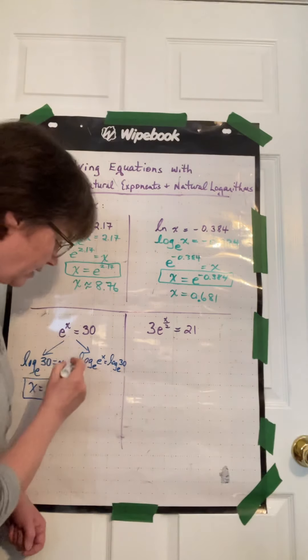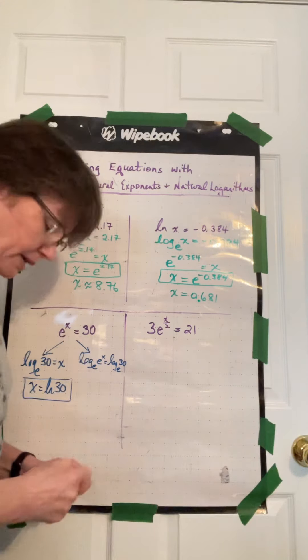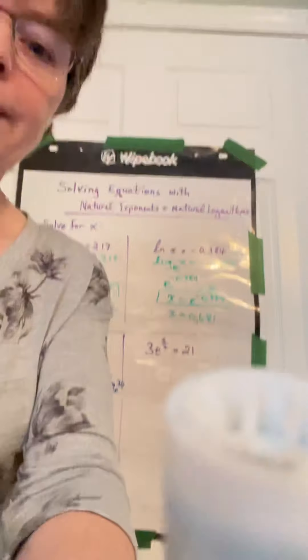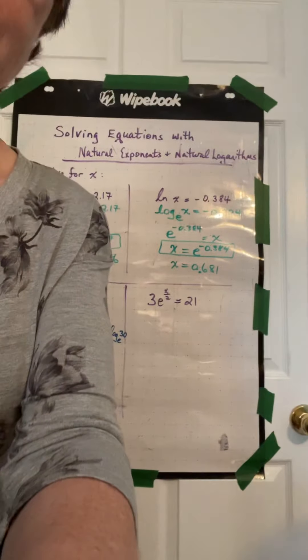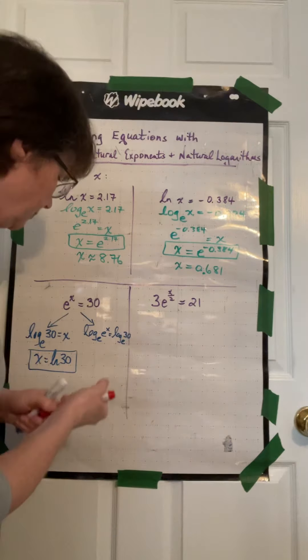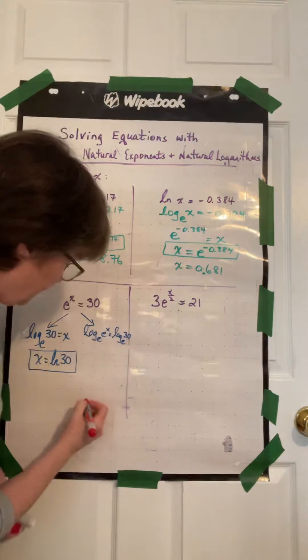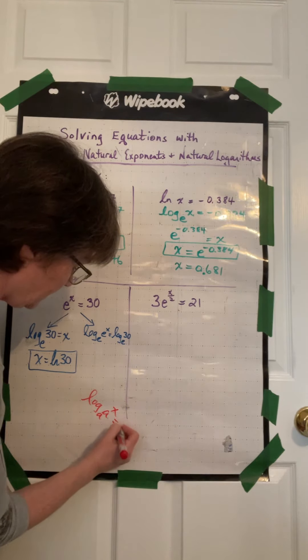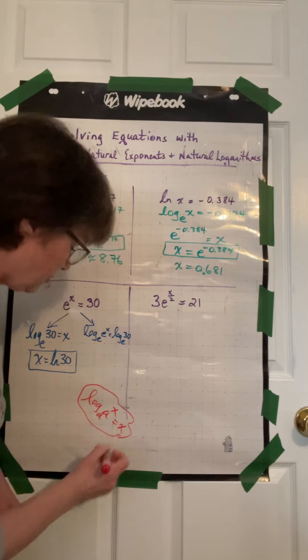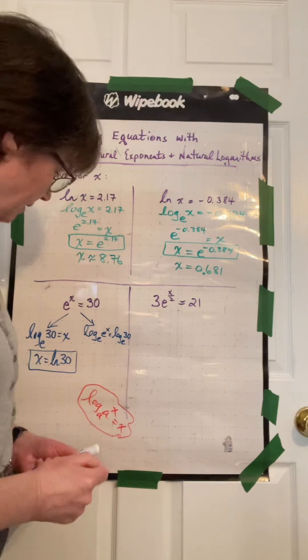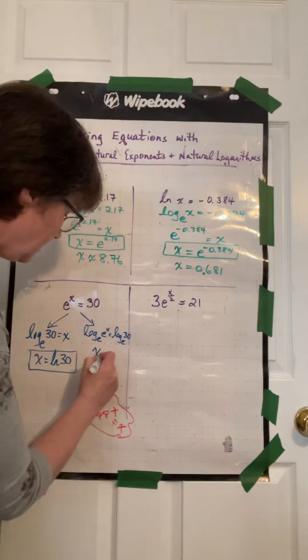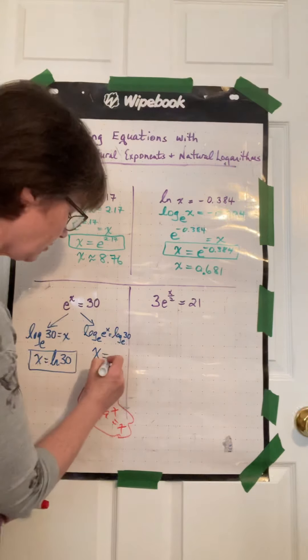And then over here on this side we can see, based on our rule that tells us log base a of a to the power of x, so based on this rule, this whole left-hand side of the equation is actually equal to x.